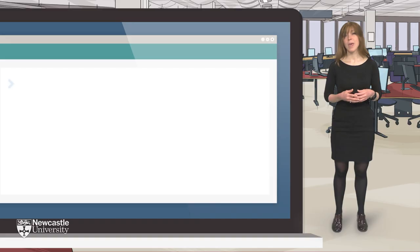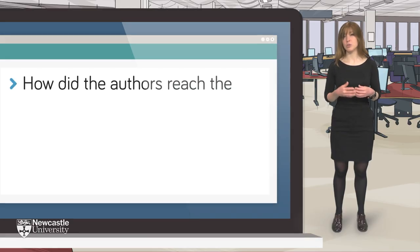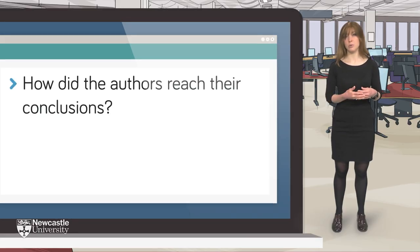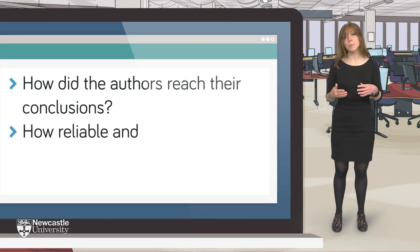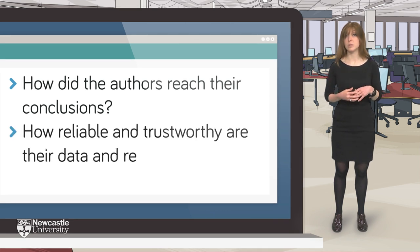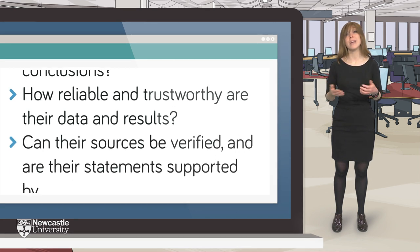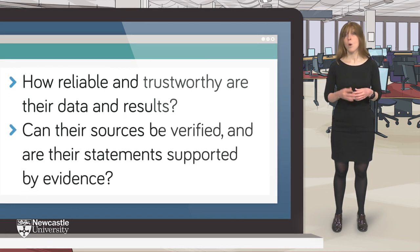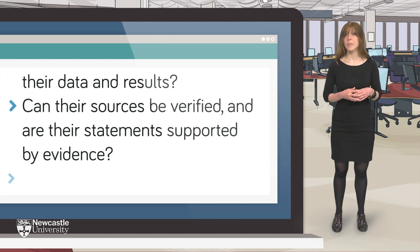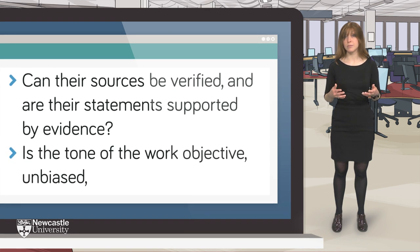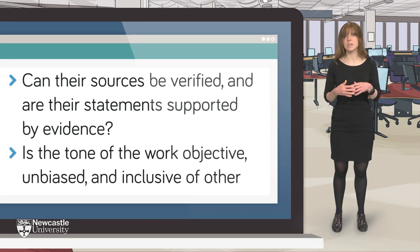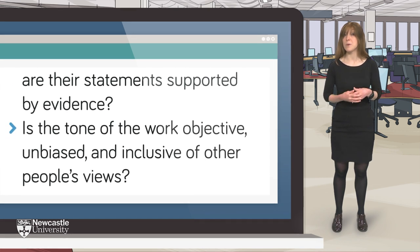How? How did the authors of the information reach their conclusions? If it's a research-based publication, how reliable and trustworthy are their data and results? Can their sources be verified and are their statements supported by evidence? Also, is the tone of the work objective, unbiased and inclusive of other people's views?